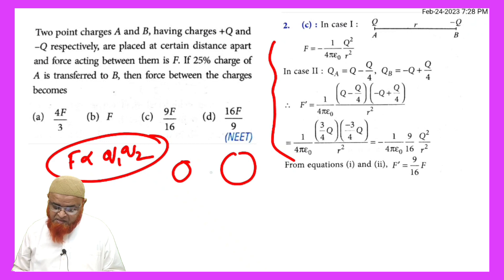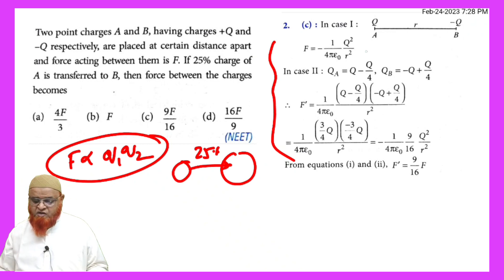And it is said that 25% is transferred from one charge to other charge. Previously, the same charges are taken. Now, 25% is transferred. And this is the method given in the books.